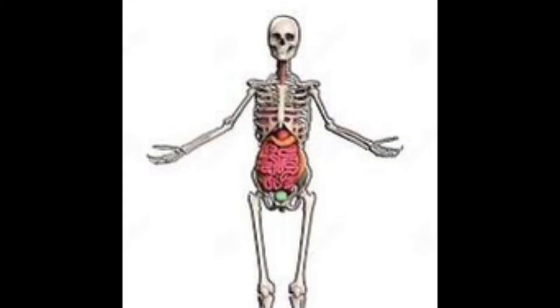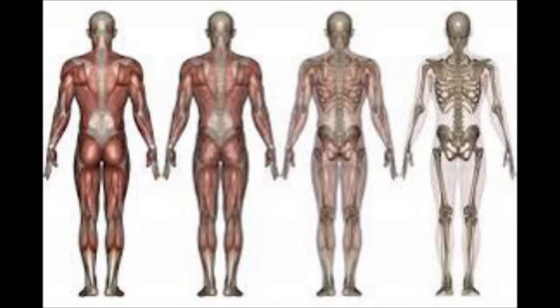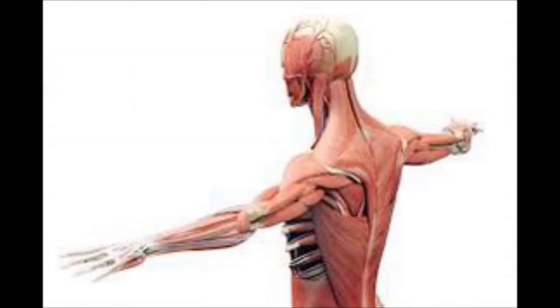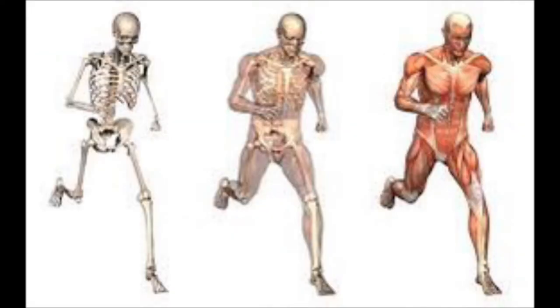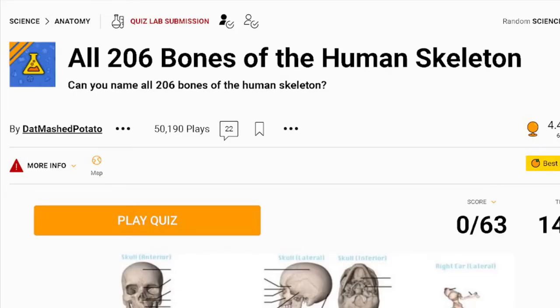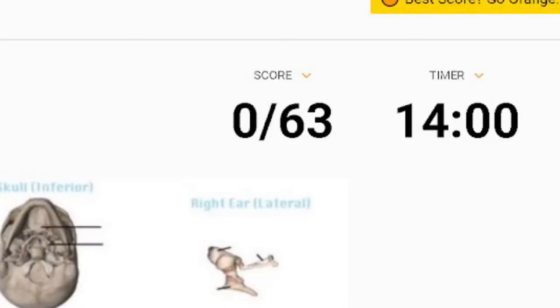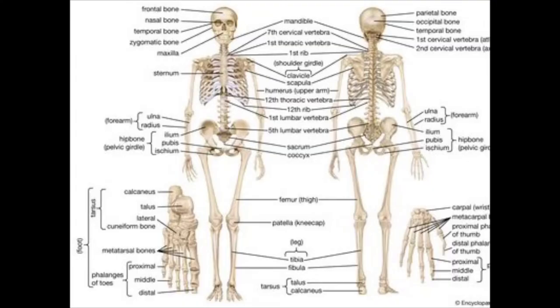The skeletal system provides shape, stability, protects your internal organs, produces blood cells and forms an area for muscles to attach aiding in locomotion. So I have opened up a quiz on my computer on the website called Sparkle on which I will be naming all the 206 bones. As you can see there are only 63 things I need to name as most bones are either repeated twice or more.